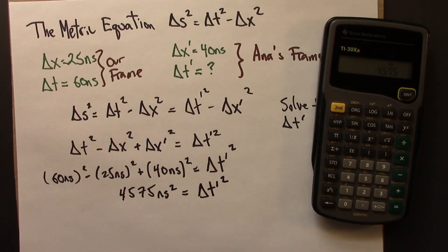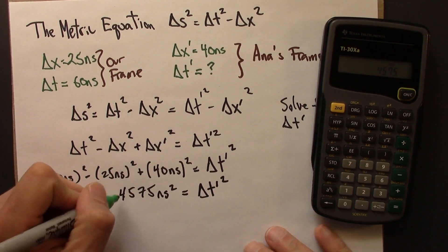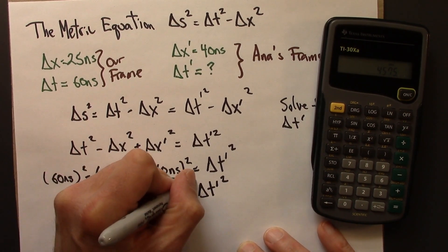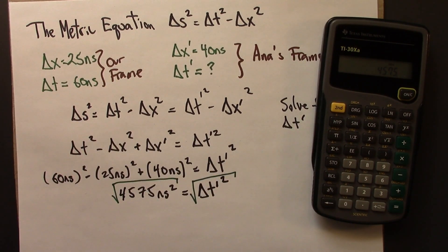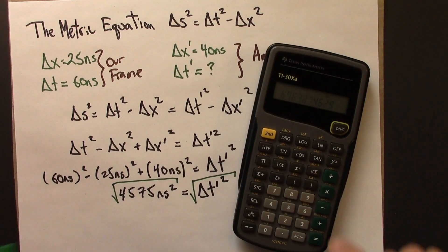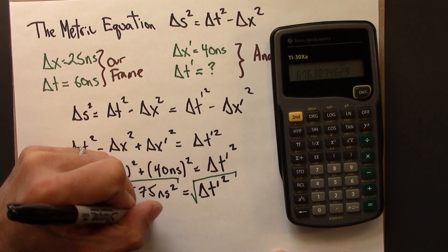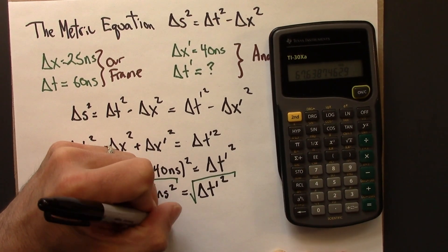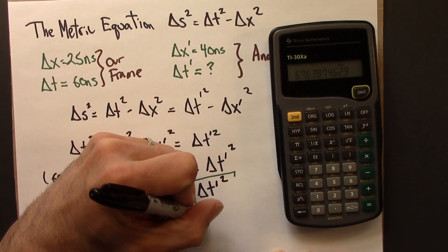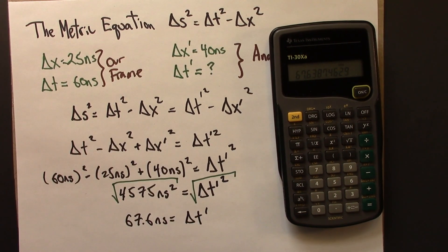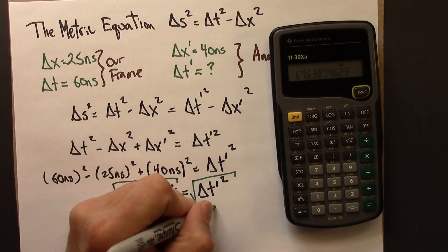And then let's take the square root of both sides of this equation. Let's do that here, square root. 67.6, 67.6 nanoseconds. And that's delta t prime. So this is our solution.